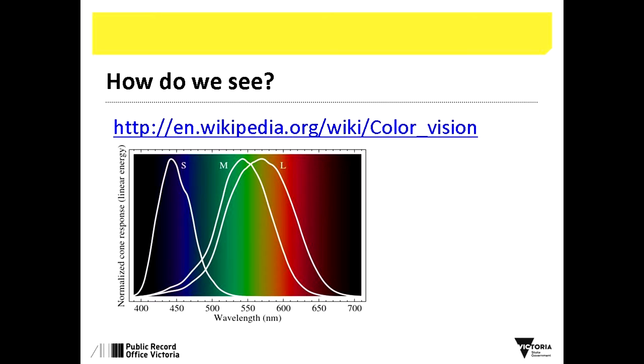That three-peak response that we naturally have has actually been used by computer scientists and engineers to design the imaging devices that we use. So whenever you look at a television, a computer scanner, or a camera, you'll often see references to red, green, and blue. That's because the cameras are like eyes in the sense that they usually have three types of sensor, each picking up wavelengths in the red, green, and blue parts of the spectrum, which are then combined to make the colors and brightnesses of the image that we see.